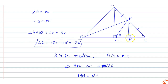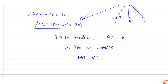In triangle MNH and triangle MNC, since HN equals NC (from the similarity ratio, as AM equals MC), both triangles share MN as a common side. Therefore triangle MNH is similar to triangle MNC.